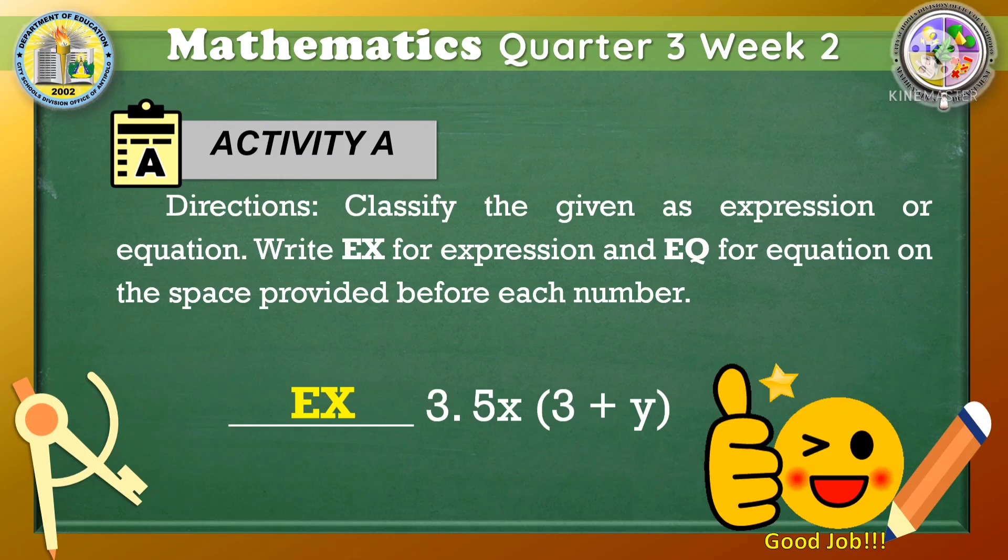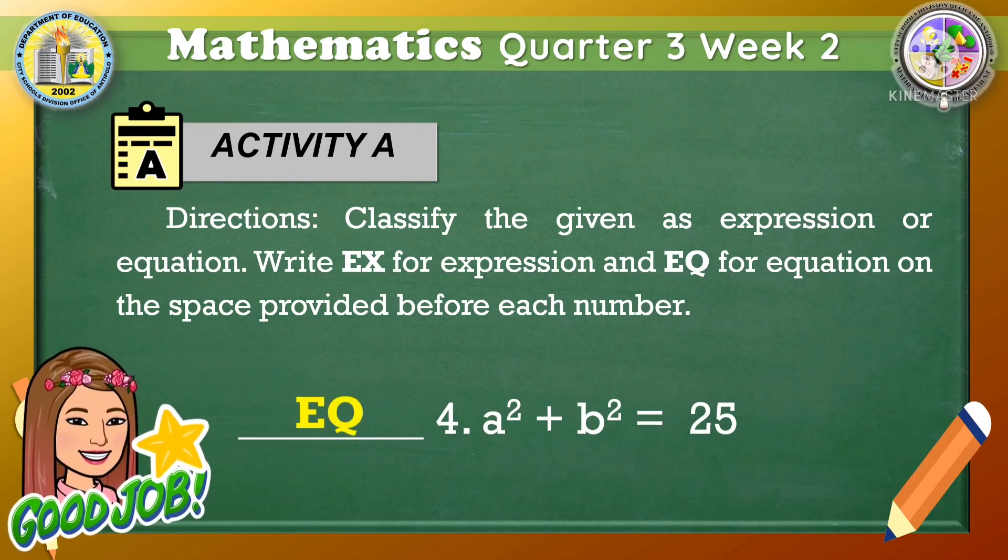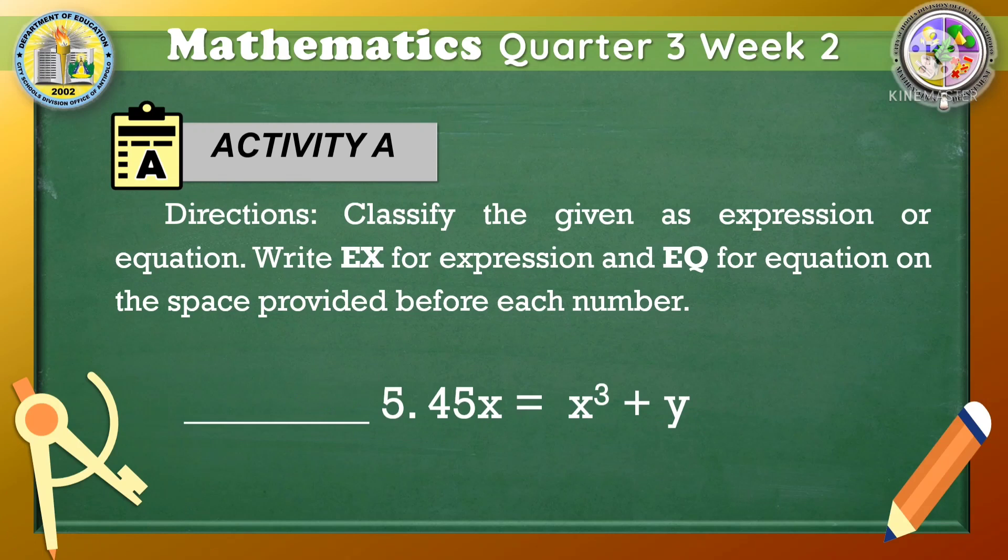Next, we have in number 4, a squared plus b squared is equal to 25. The correct answer is EQ. Good job! Last, we have 45x is equal to x cubed plus y. The correct answer is EQ. You're doing great!